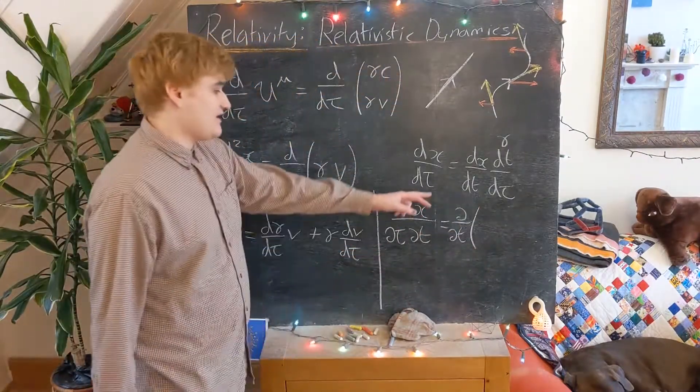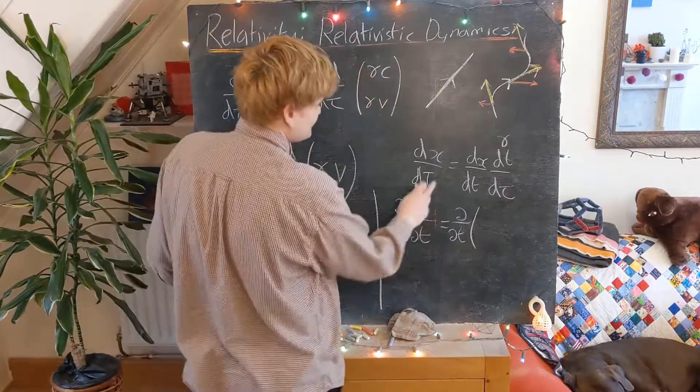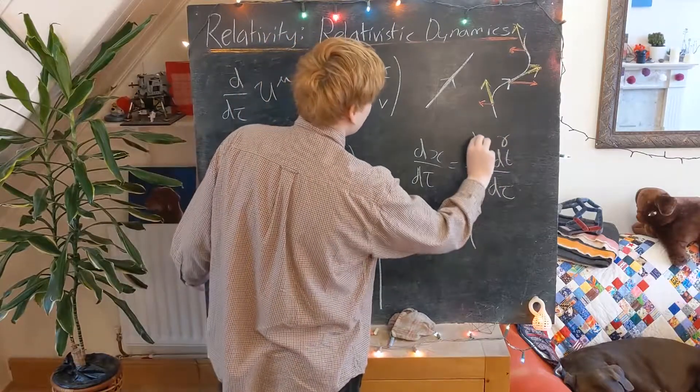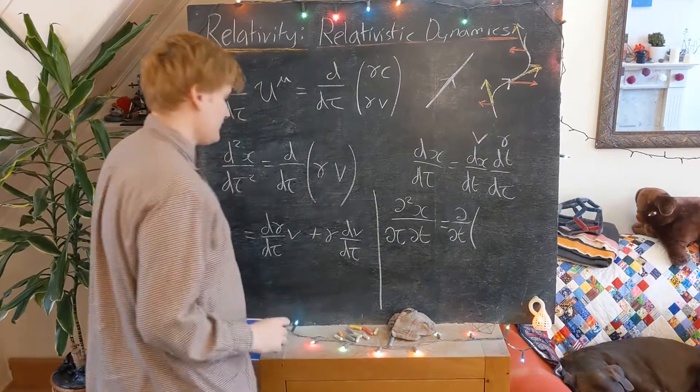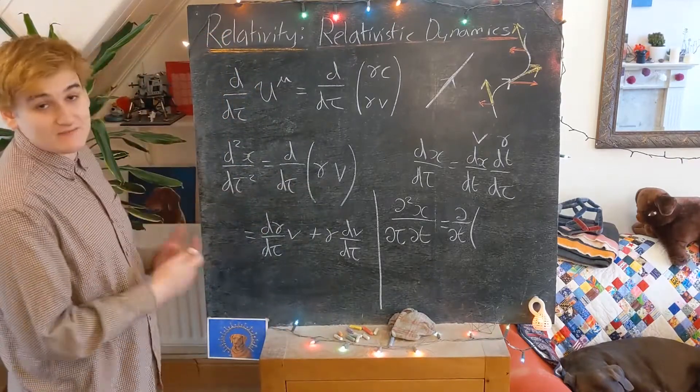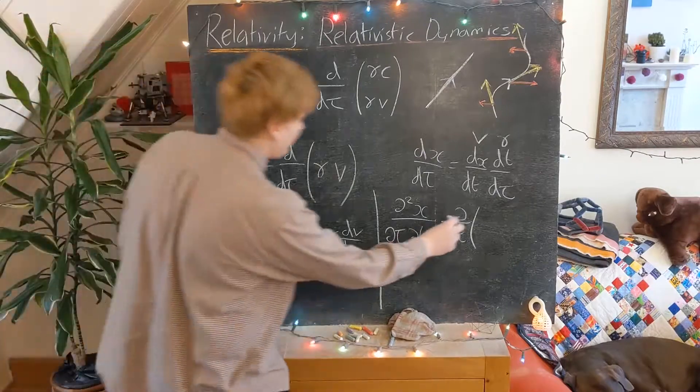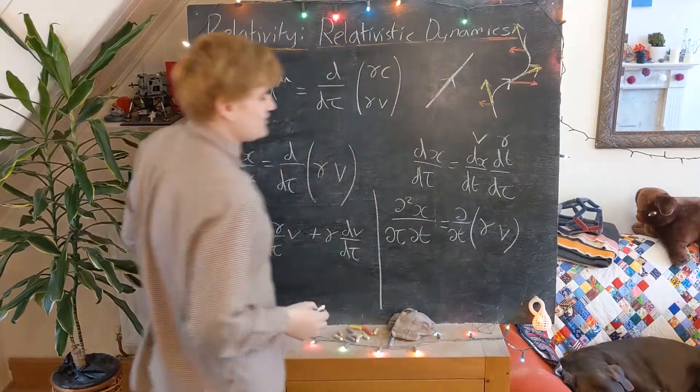So that's just going to be a d by dt of now this expression, which is, if you remember, it's gamma times v. And so we've kind of gone all the way back around and arrived at something very similar to what we had before, but just with a t here now. This is d by dt of gamma times v.